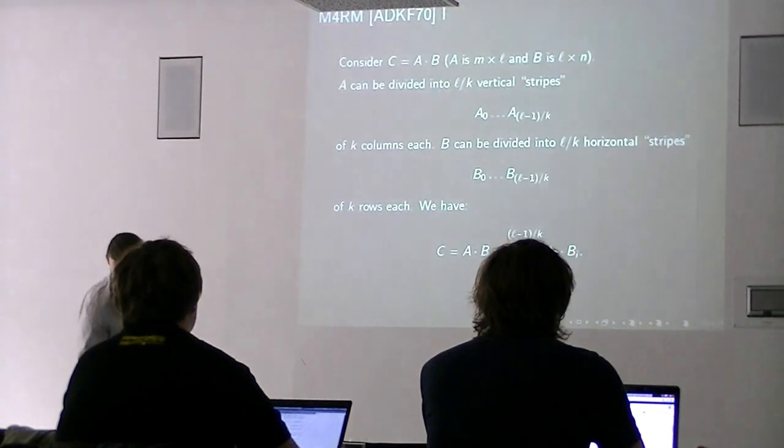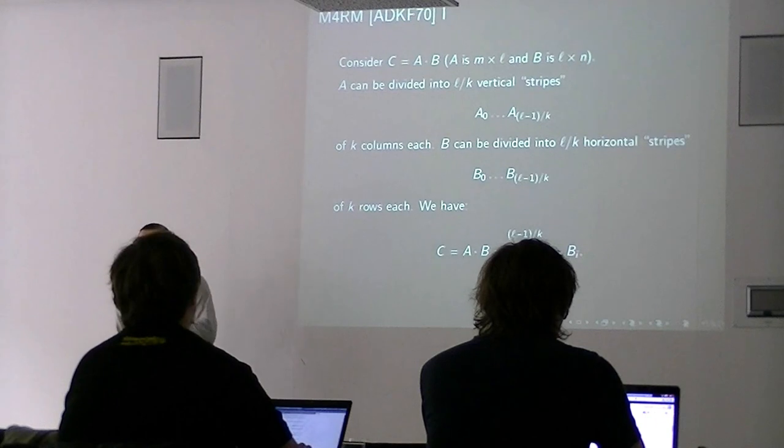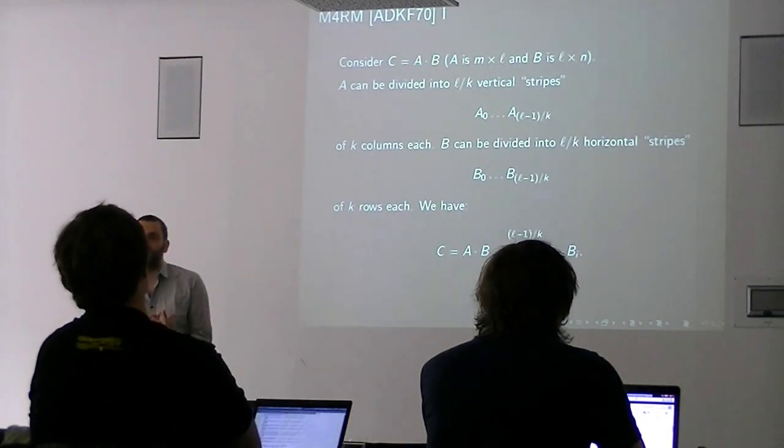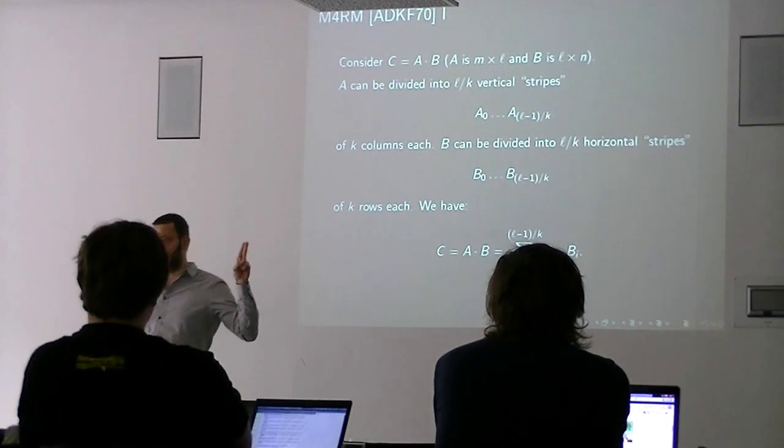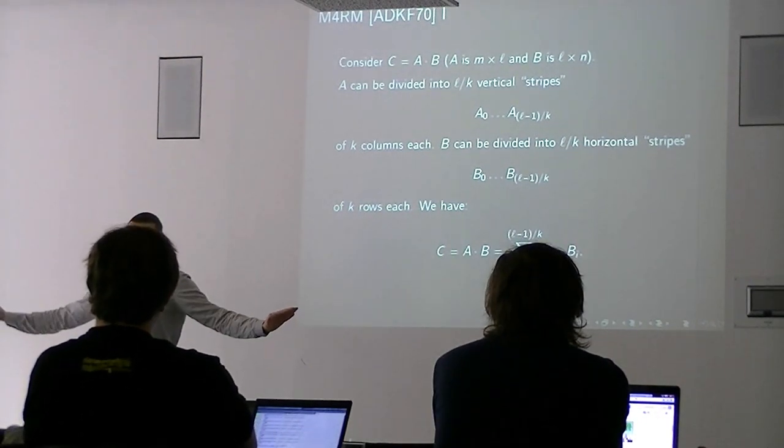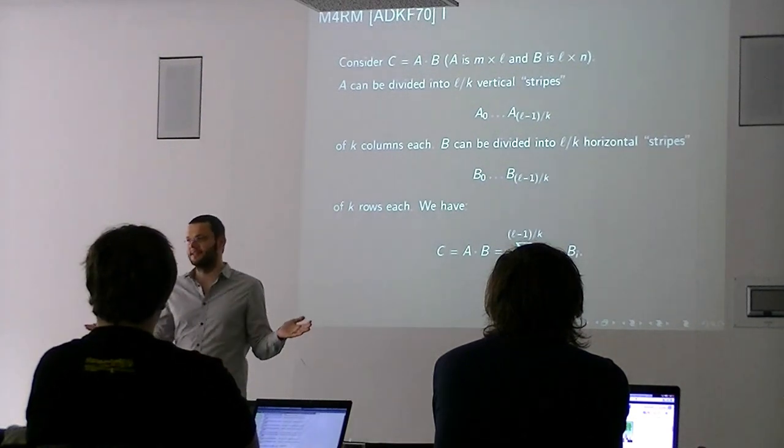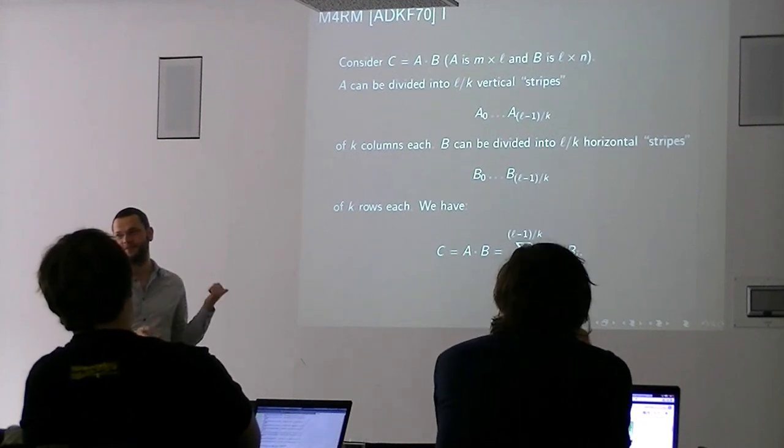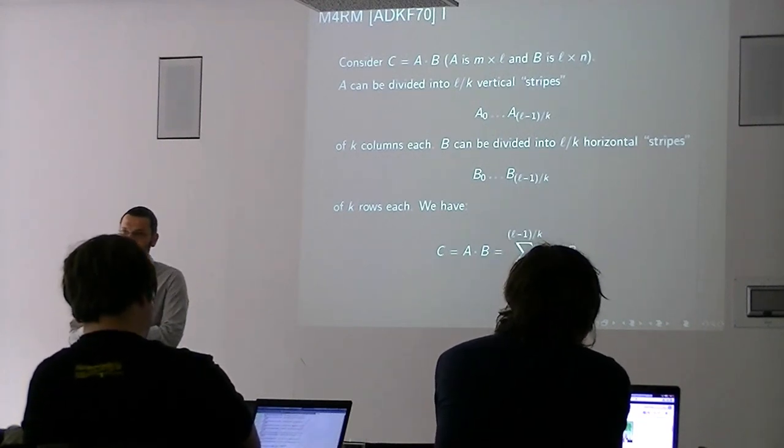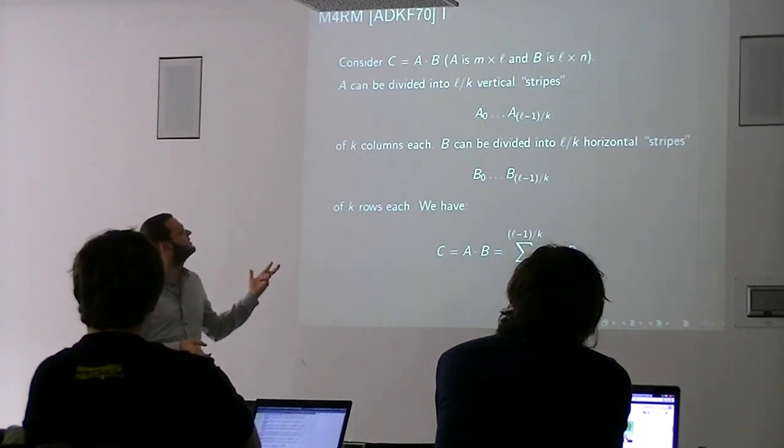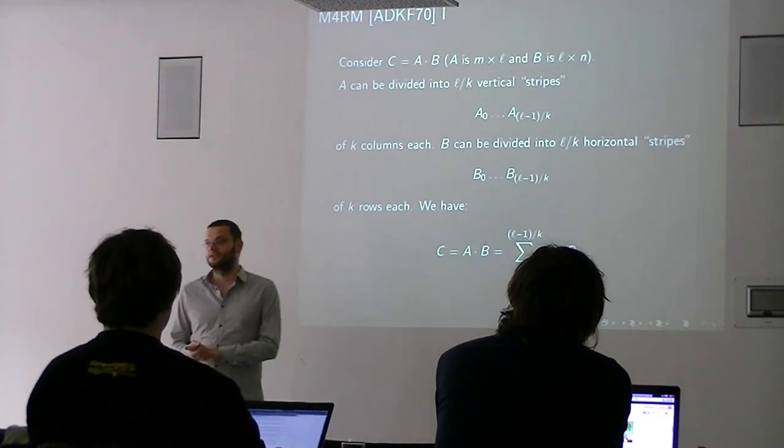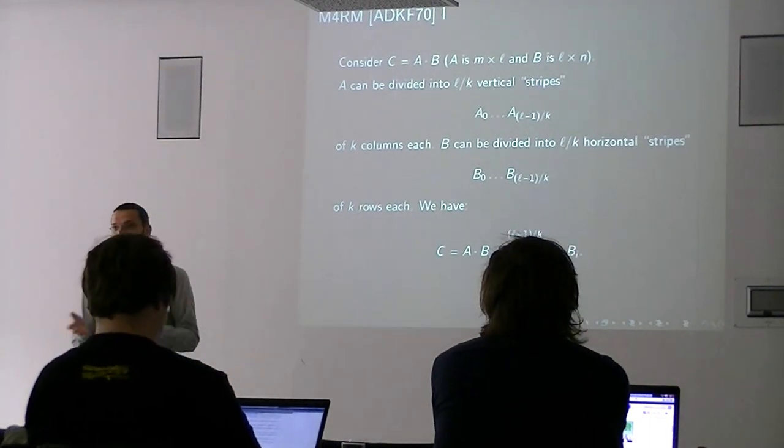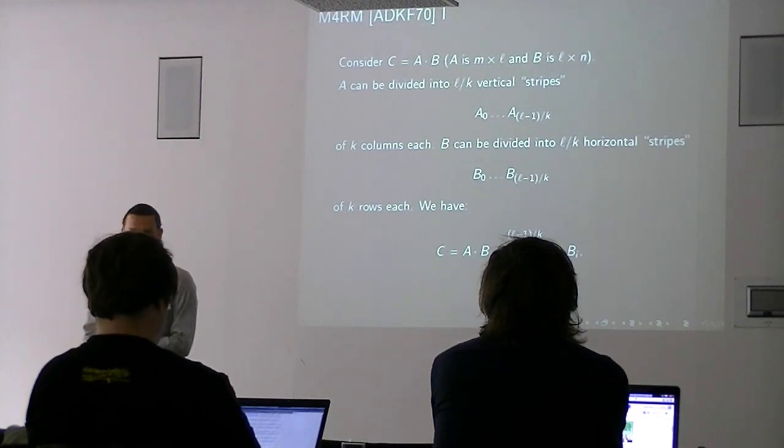So how do we do matrix multiplication? This is the so-called M4RM algorithm. It's called M4RM because it's the method of the four Russians. I should mention that none of the authors were Russian, but they had Eastern European names which some U.S. scholars thought sounded kind of Russian, and it was too complicated to say otherwise, so they called it the method of the four Russians. There were four people, although the actual trick is due to Kronrod. So if you don't want to get in trouble with Bernstein, or if you want to be precise, you call this the Kronrod method. But everybody calls it M4RM.